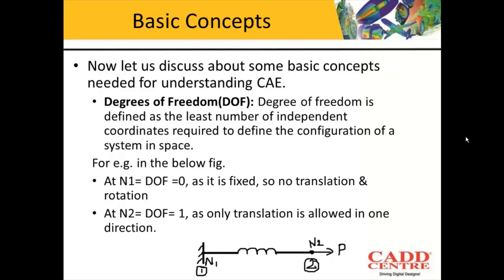Now let us discuss some basic concepts needed for understanding CAE. The first is degrees of freedom (DOF). Degree of freedom is defined as the least number of independent coordinates required to define the configuration of a system in space.